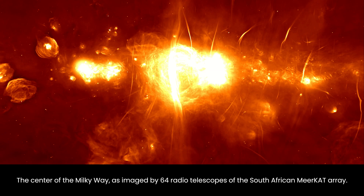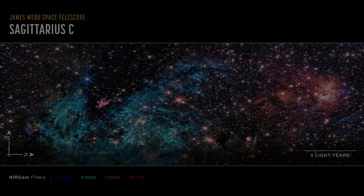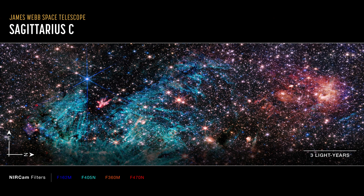Researchers are particularly interested in understanding if more massive stars form in the Milky Way's center compared to its spiral arms and edges. In conclusion, the image from the James Webb Space Telescope offers a stunning view of the galactic center, providing valuable data that promises to enhance our understanding of star formation, especially in the dynamic and chaotic environment of the Milky Way's core.